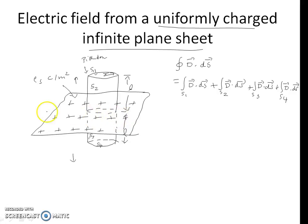From this figure you can see that the flux density D is tangential to surface S2 and also tangential to surface S3. Therefore no flux can emerge from S2 and S3. Flux can emerge only from S1 and S4.